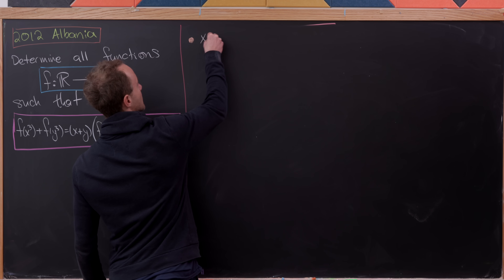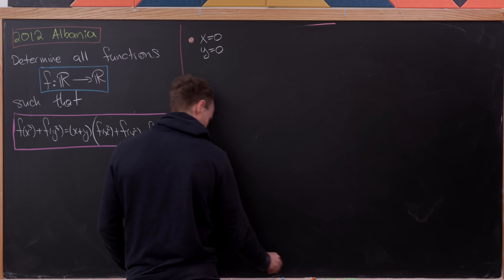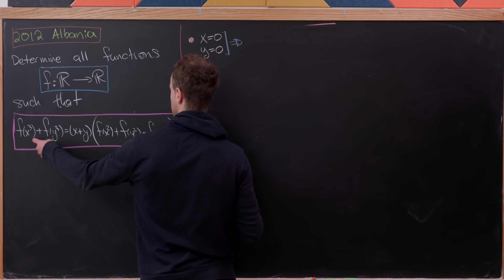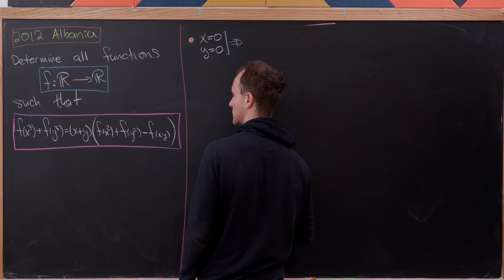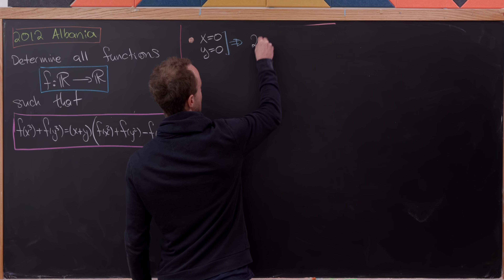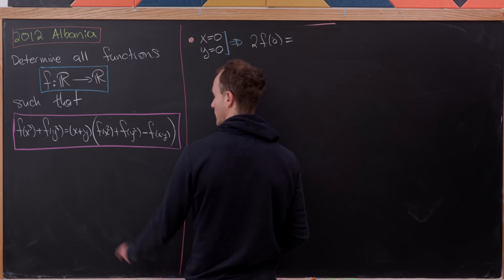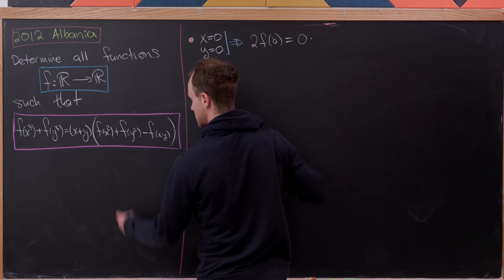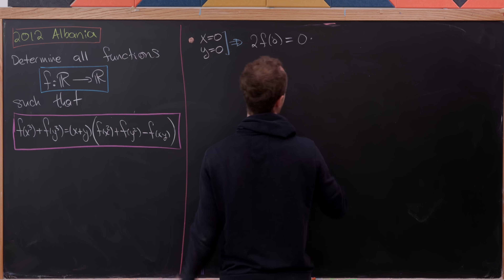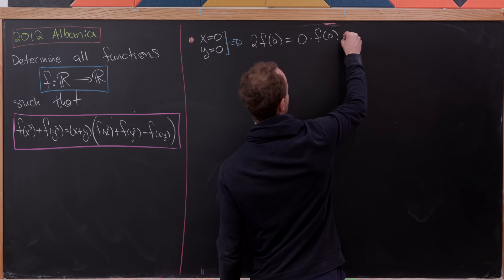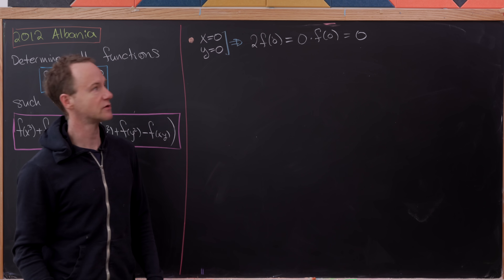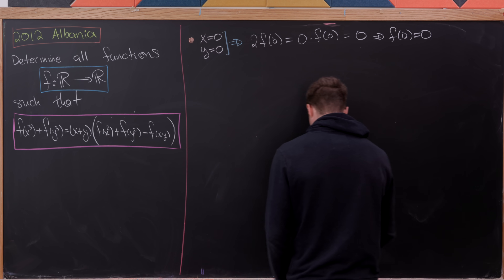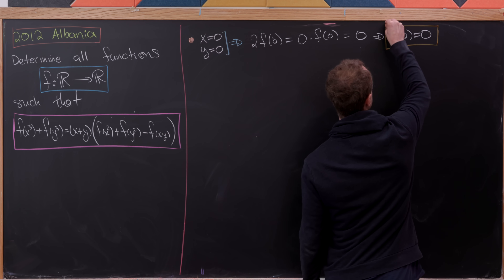Let's start by evaluating with x and y equal to 0. Since 0 cubed and 0 squared are both 0, the left-hand side becomes 2·f(0), and the right-hand side is 0 times f(0) + f(0) - f(0), which is 0. After dividing by 2, we see clearly that f(0) = 0.